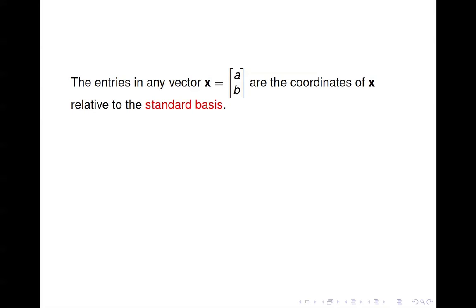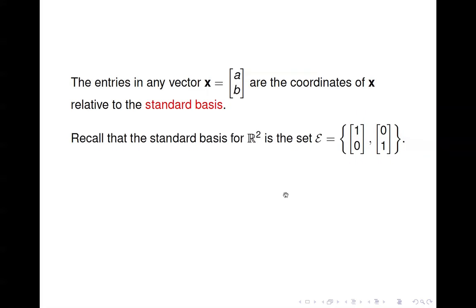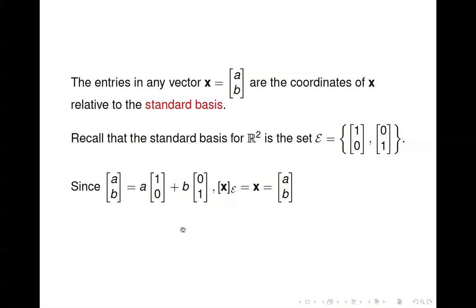This is a little bit of an aside, but it leads into what we'll talk about next. If you have any vector — say just (a, b) — then the vector itself is the coordinate vector relative to the standard basis. The standard basis for R2 is just the two columns of the identity matrix, which your book refers to with a script E. Notice that a vector (a, b) is just a times (1,0) plus b times (0,1), so your coordinates are a and b. Therefore, the coordinate vector is just equal to the vector itself. Relative to the standard basis, the entries in a vector are the entries in the coordinate vector.